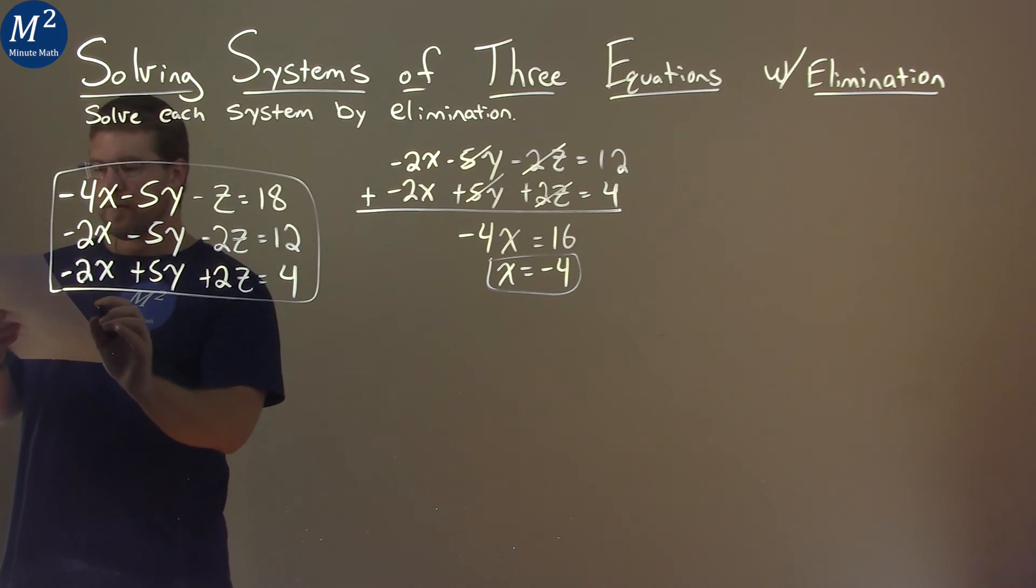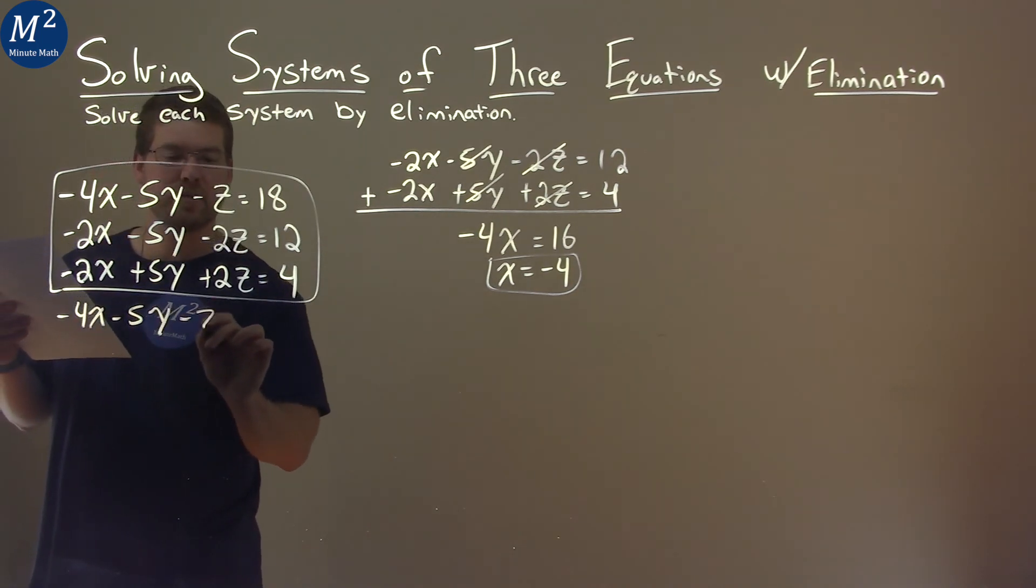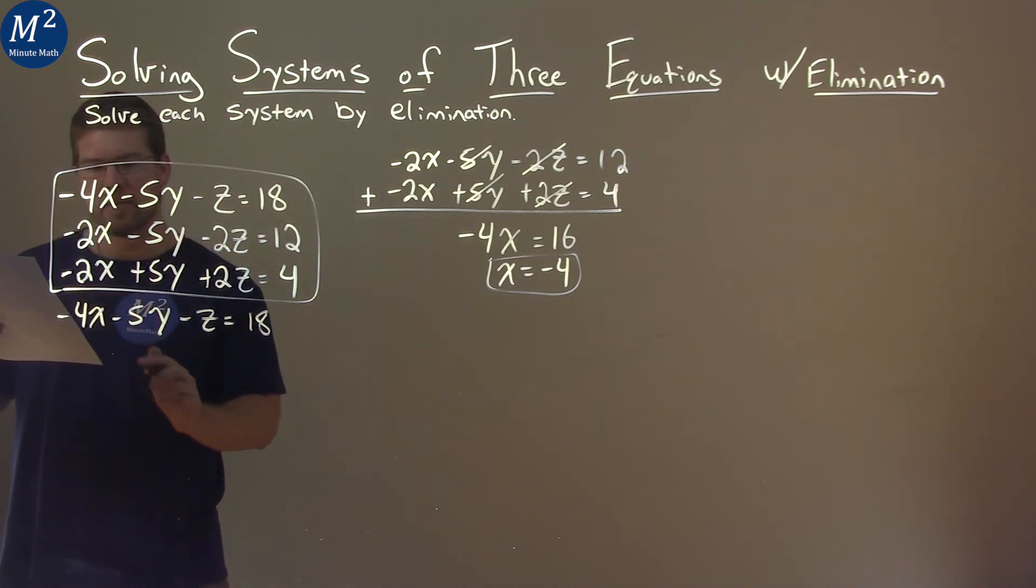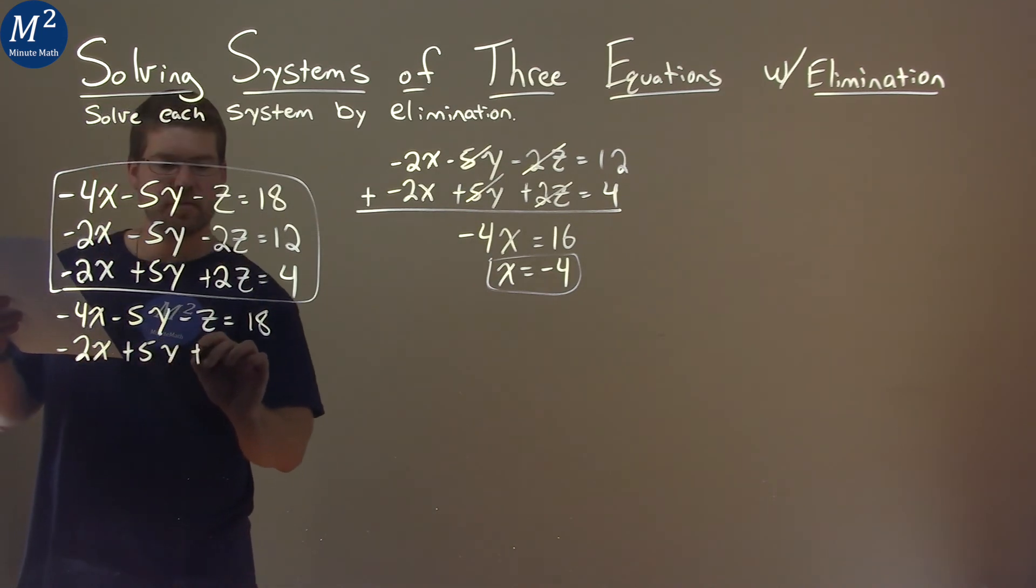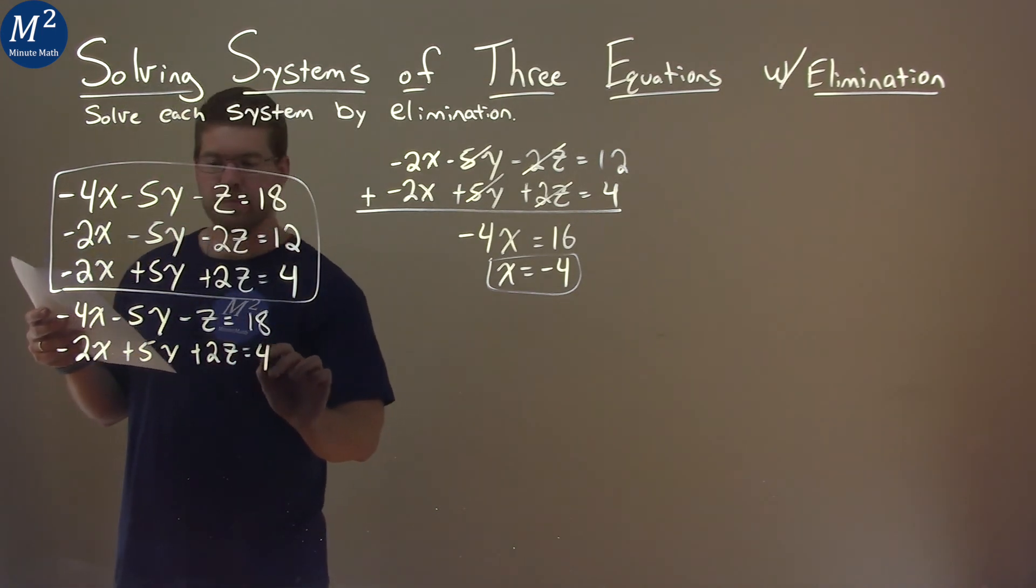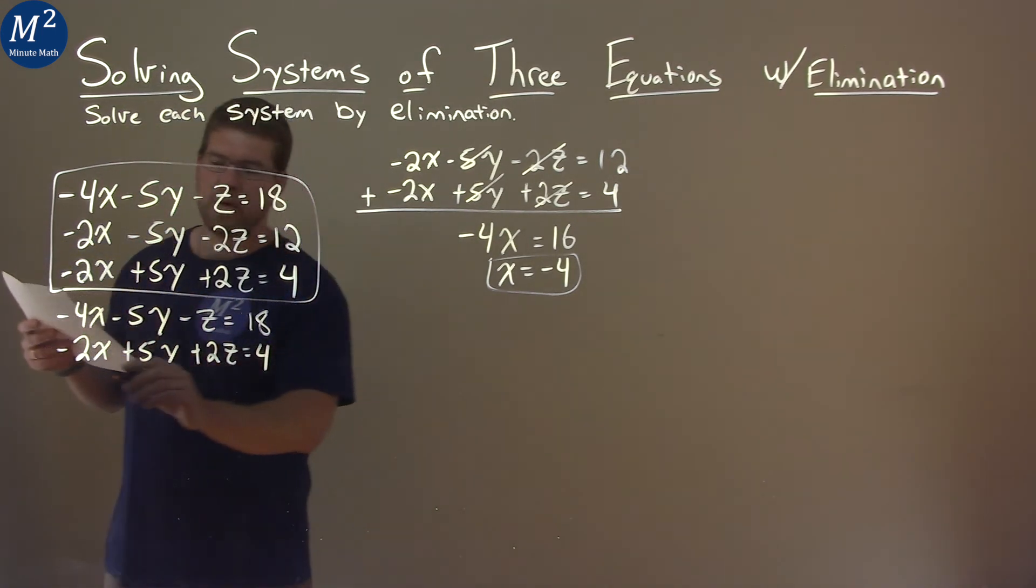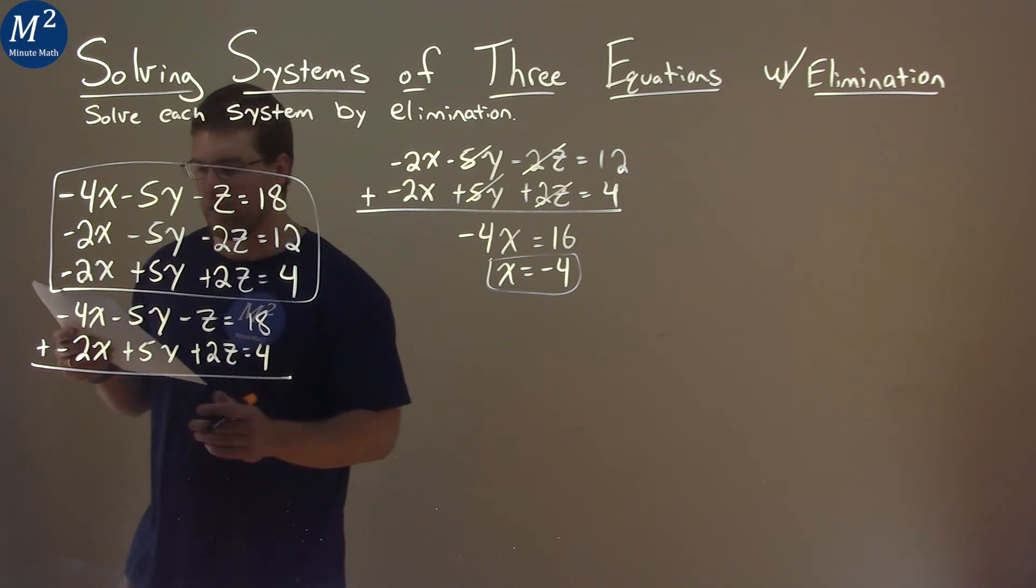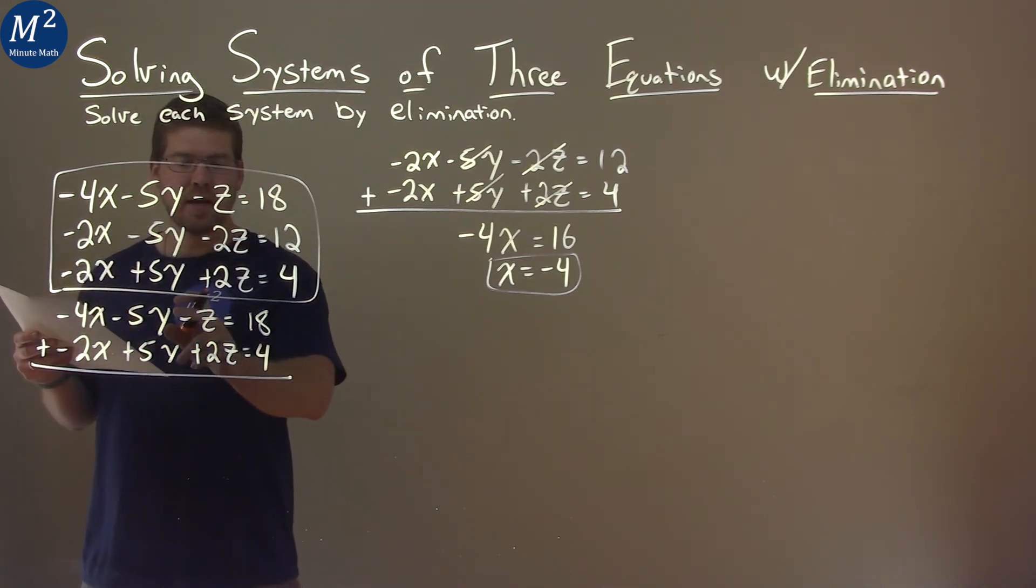We rewrite the first equation, negative 4x minus 5y minus z equals 18. And the last equation, negative 2x plus 5y plus 2z, and that equals 4. If we add these two equations, what will get eliminated? Well, again, the 5y gets eliminated. We can see that here.